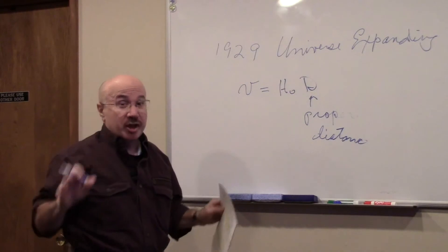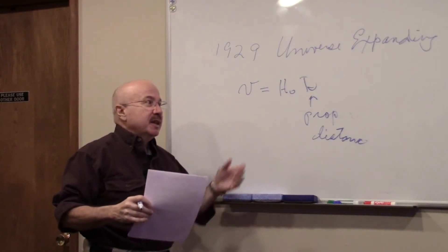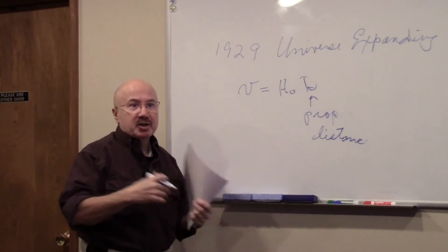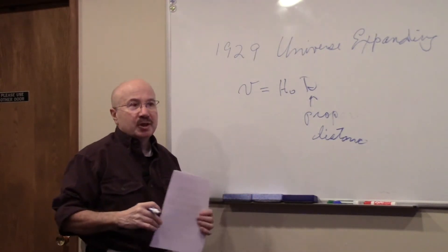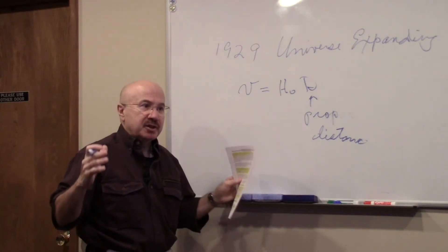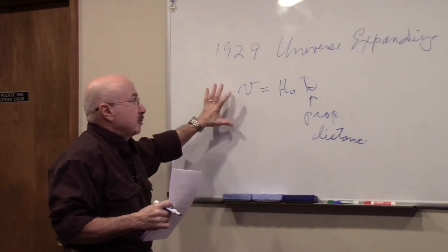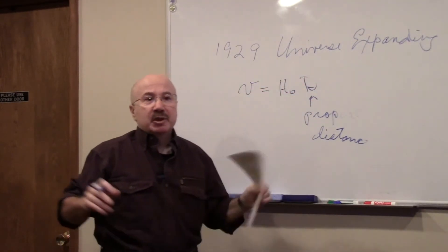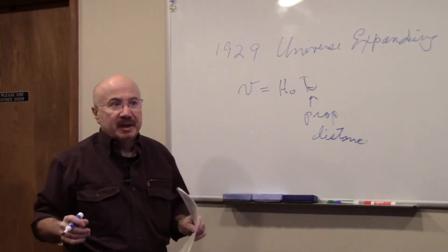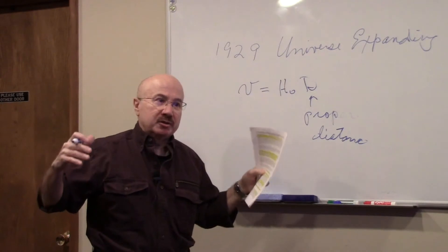This caused a lot of changes. Einstein had to revise his general theory of relativity, and he took out the cosmological constant, because he had put that in arbitrarily to predict a static universe. Now science embraced the idea that the universe was expanding.